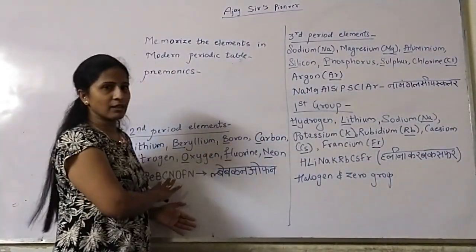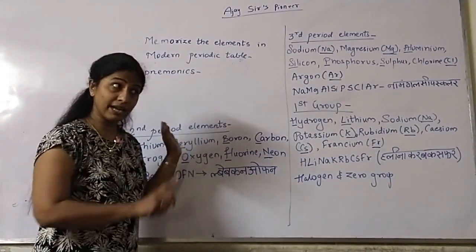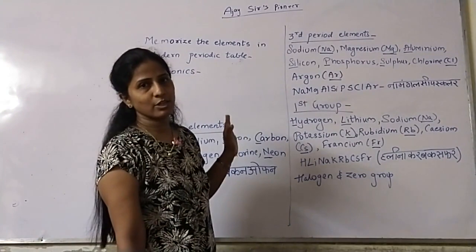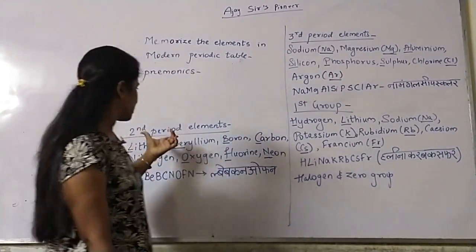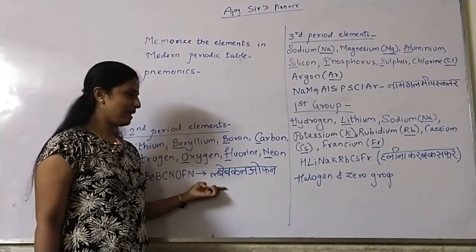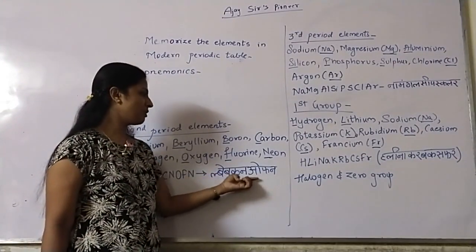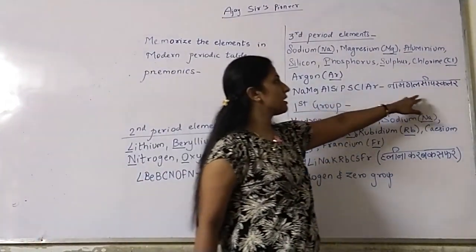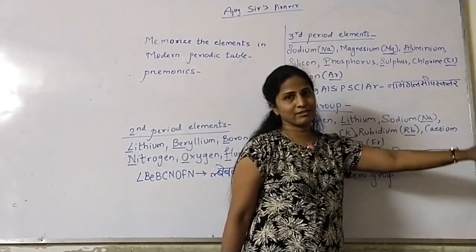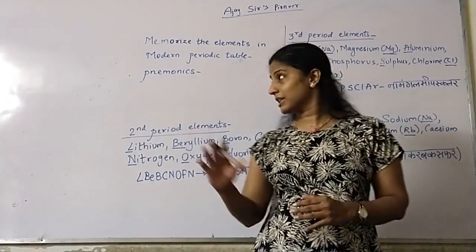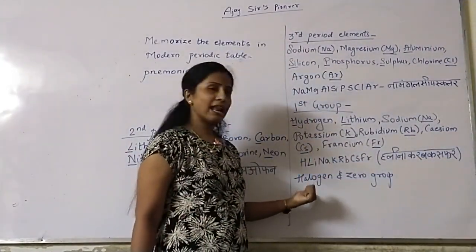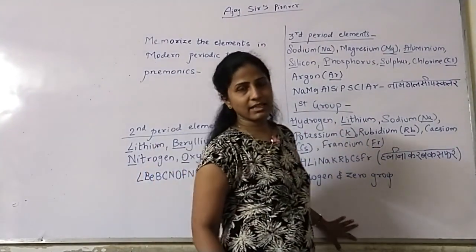So let us recall all our mnemonics: second period — 'Blade Bakan Open,' third period — 'Namangal Sipas Color,' first group alkali metals — 'Halina Karab Kaspar.' We also have to remember the halogens and the zero group. These are the three sets of elements we have covered.